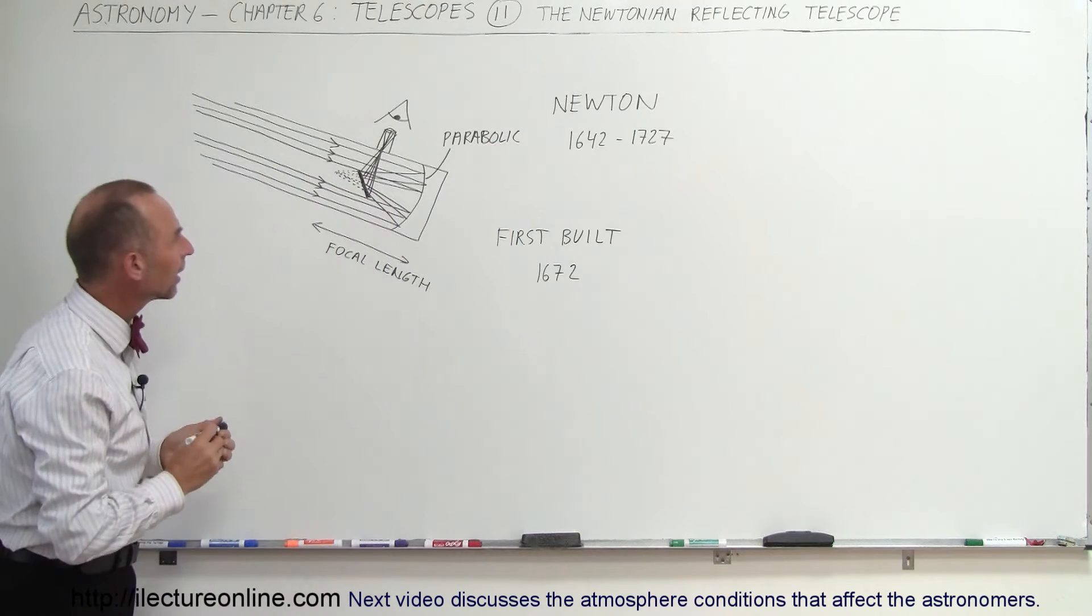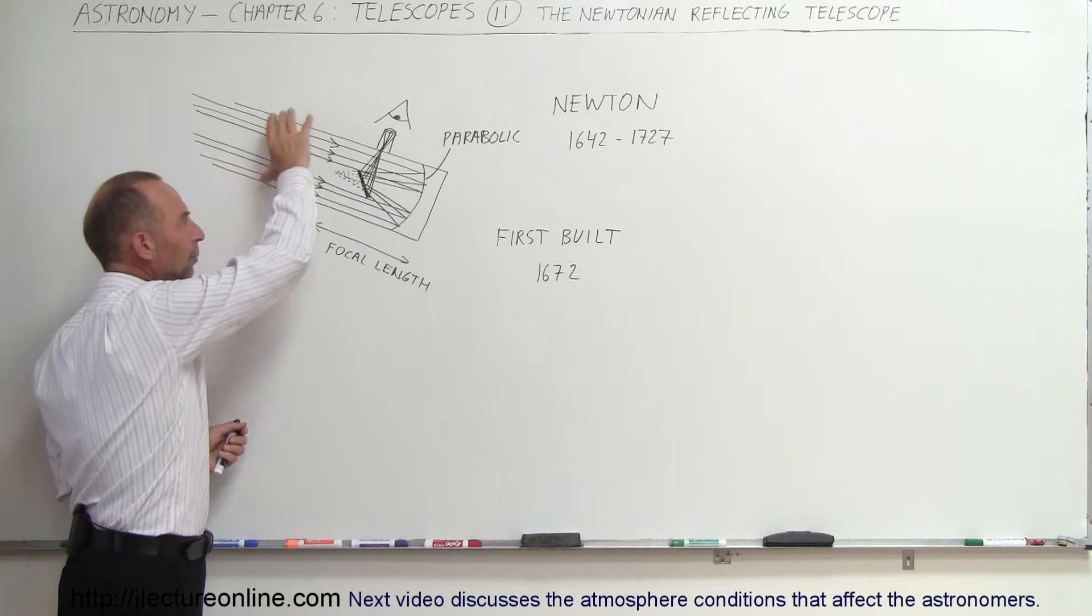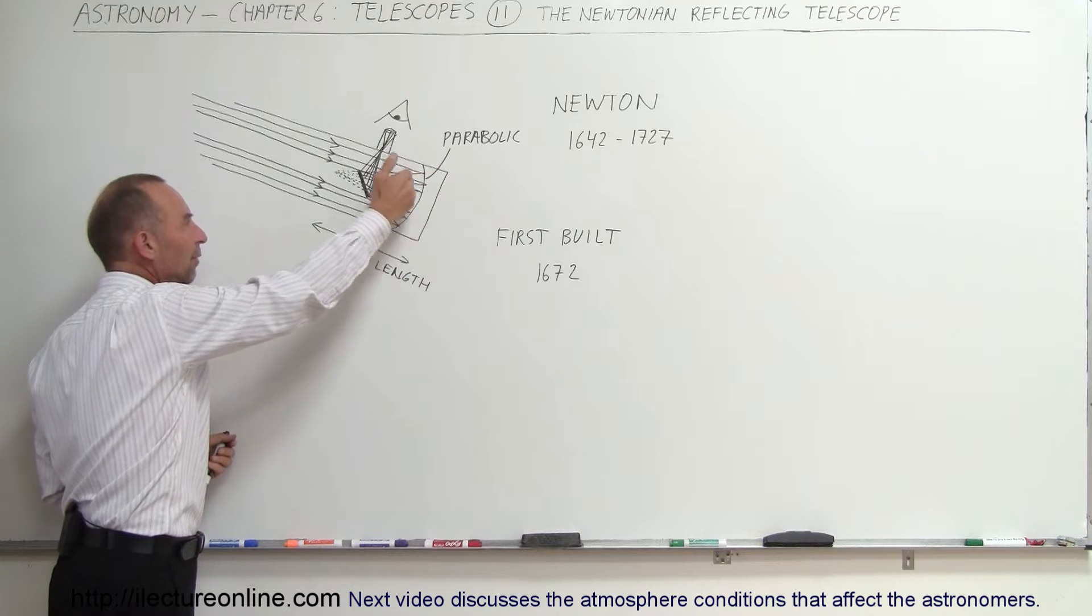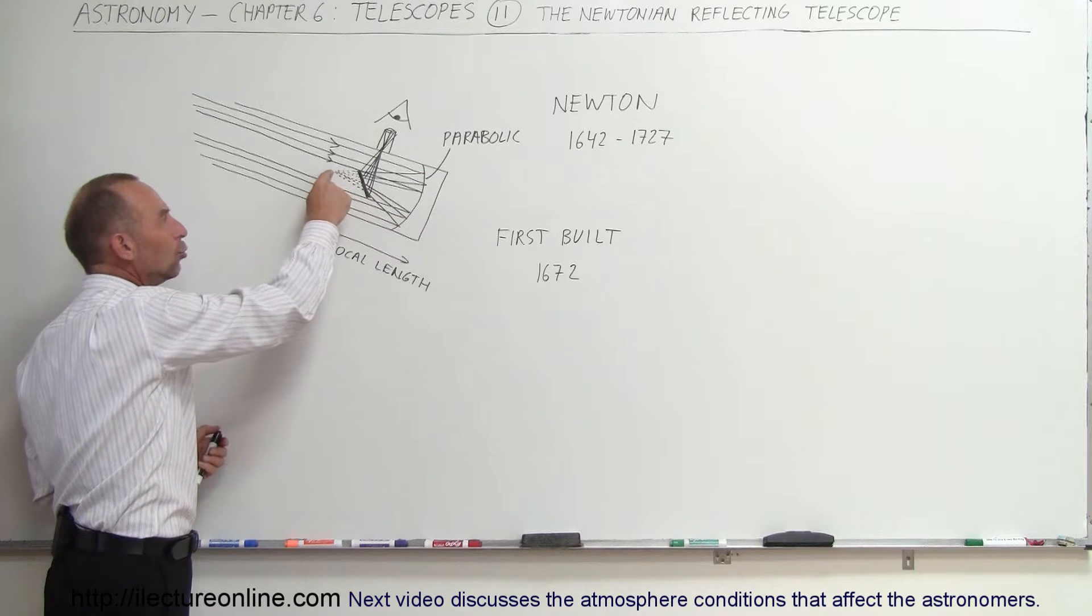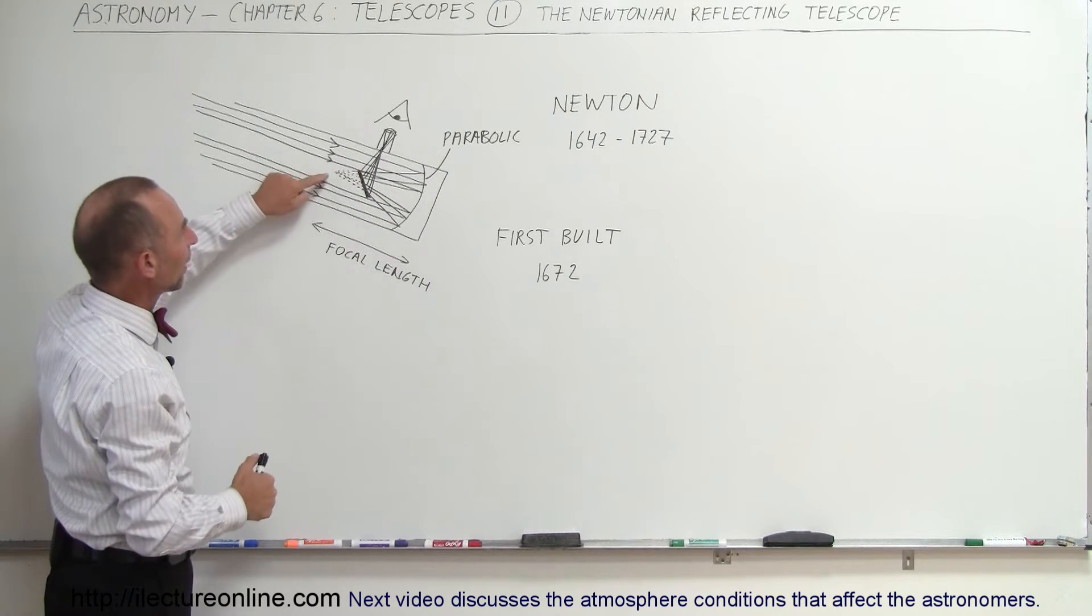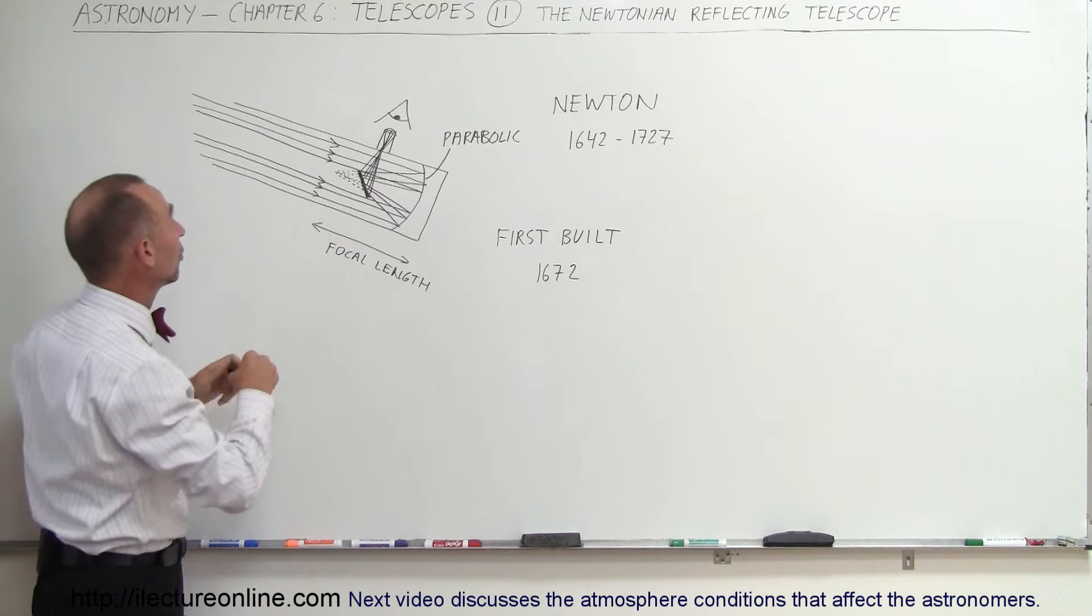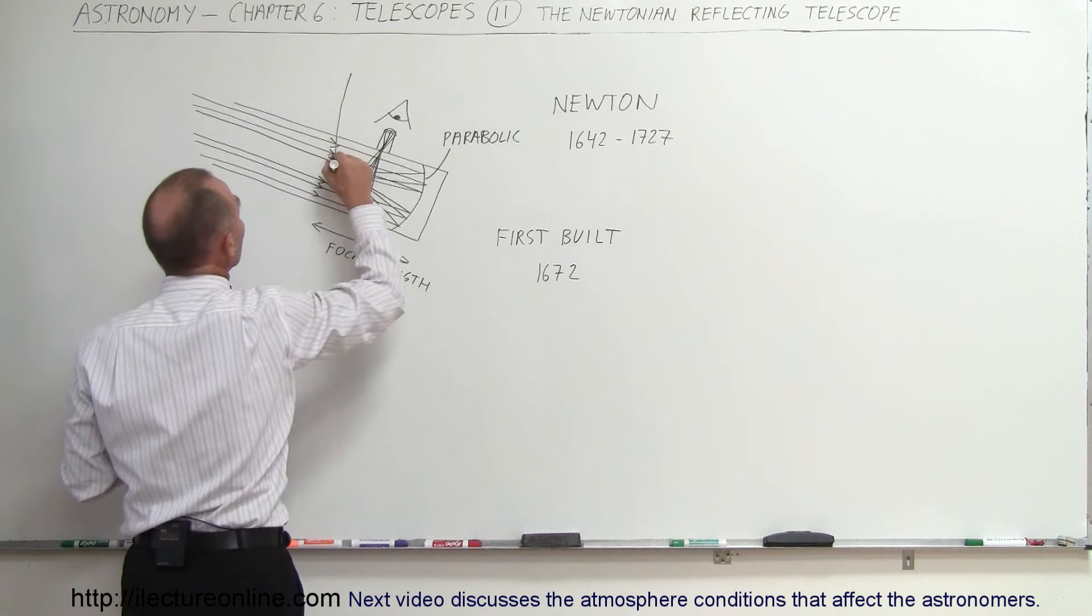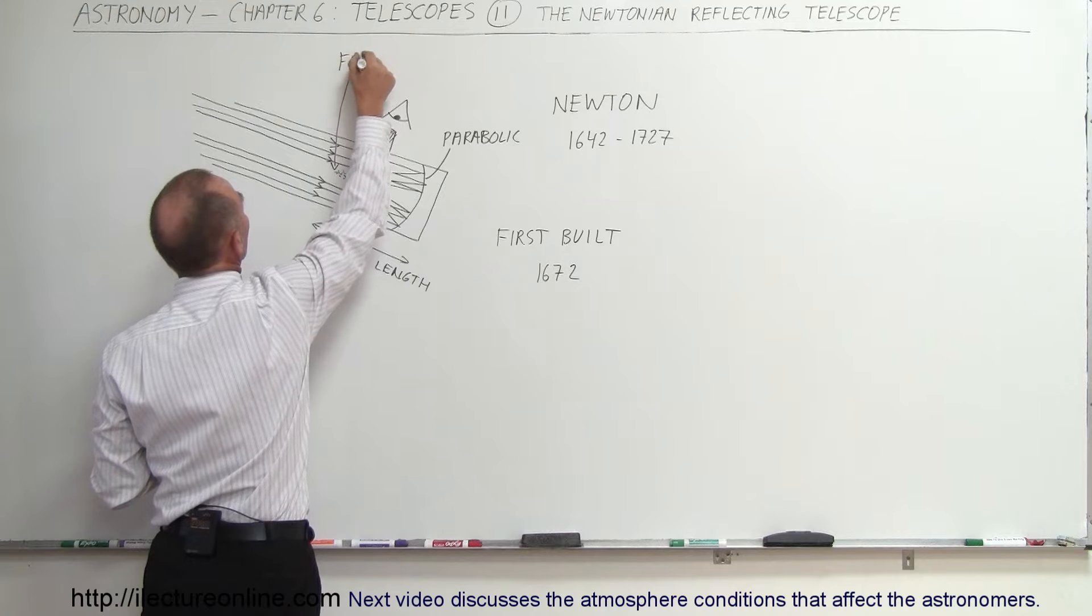Parabolic, that's spelled correctly there. So what would happen is the light would come in, bounce off the mirror, reflect back up, and would normally come together at a single point right here, which would then be the focal point. So this here would be the focal point of the objective lens. It's called the focal point.